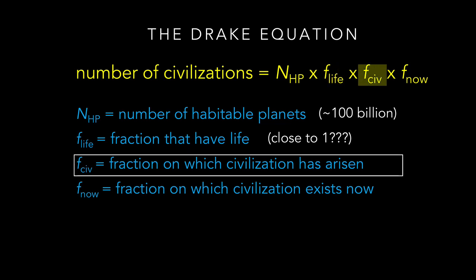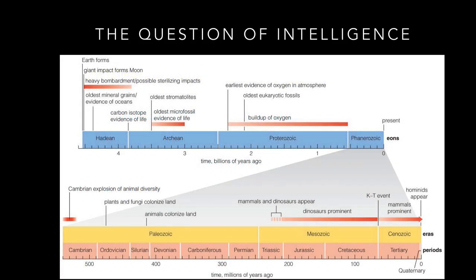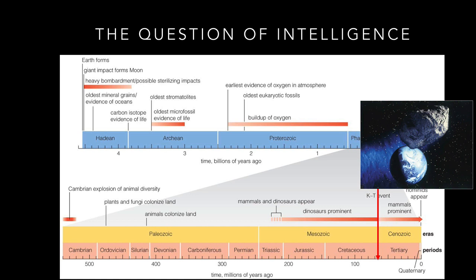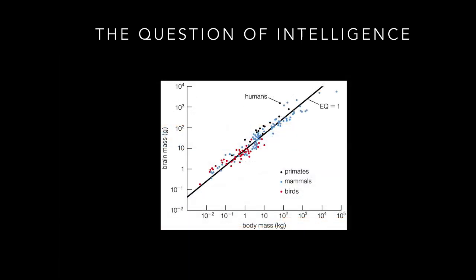Moving on to the third term, we are essentially asking how likely it is that a world on which primitive life takes hold would eventually have that life evolve into a form intelligent enough to build radio telescopes. This term is particularly difficult because the example of Earth is somewhat ambiguous. Looking at the geological timescale, the early origin of life may suggest that life got started fairly easily. However, it then took nearly 4 billion years for intelligence like ours to evolve, which makes the evolution of intelligence seem much more difficult. Moreover, many seemingly random events, including the KT impact 65 million years ago, appear to have played a role in making our evolution possible. Nevertheless, some biologists suspect that the evolutionary advantages of intelligence mean it is likely to evolve eventually, and data provide at least some support for this idea.